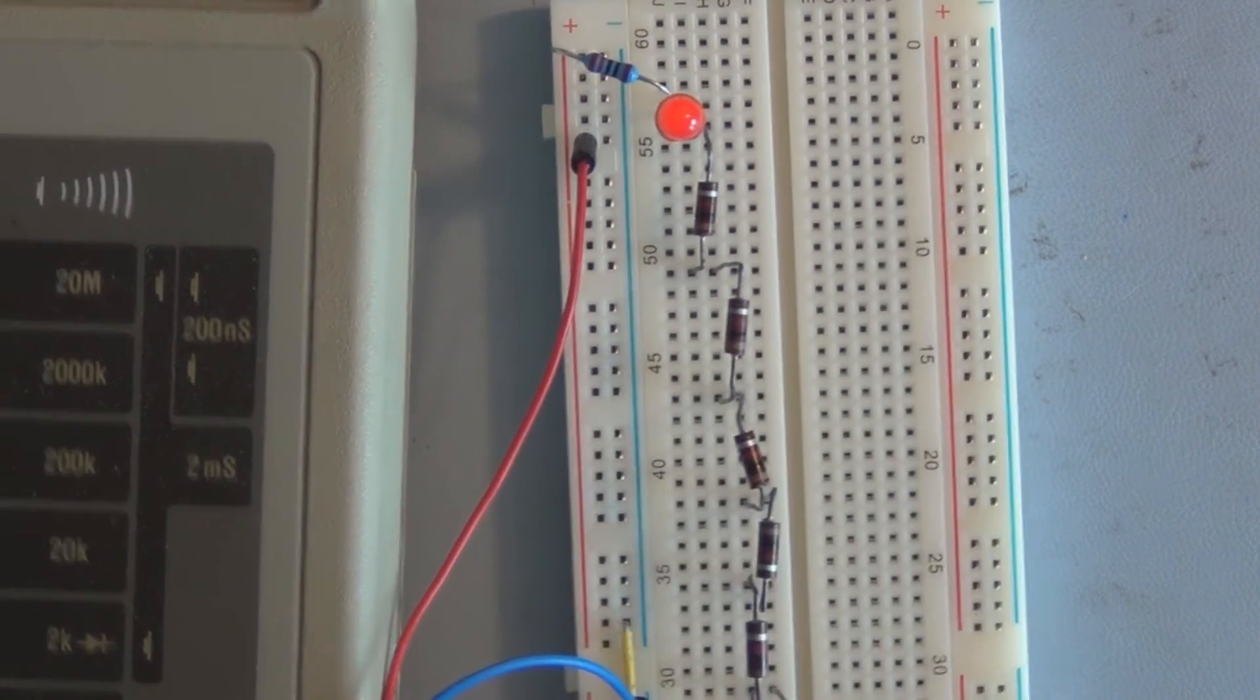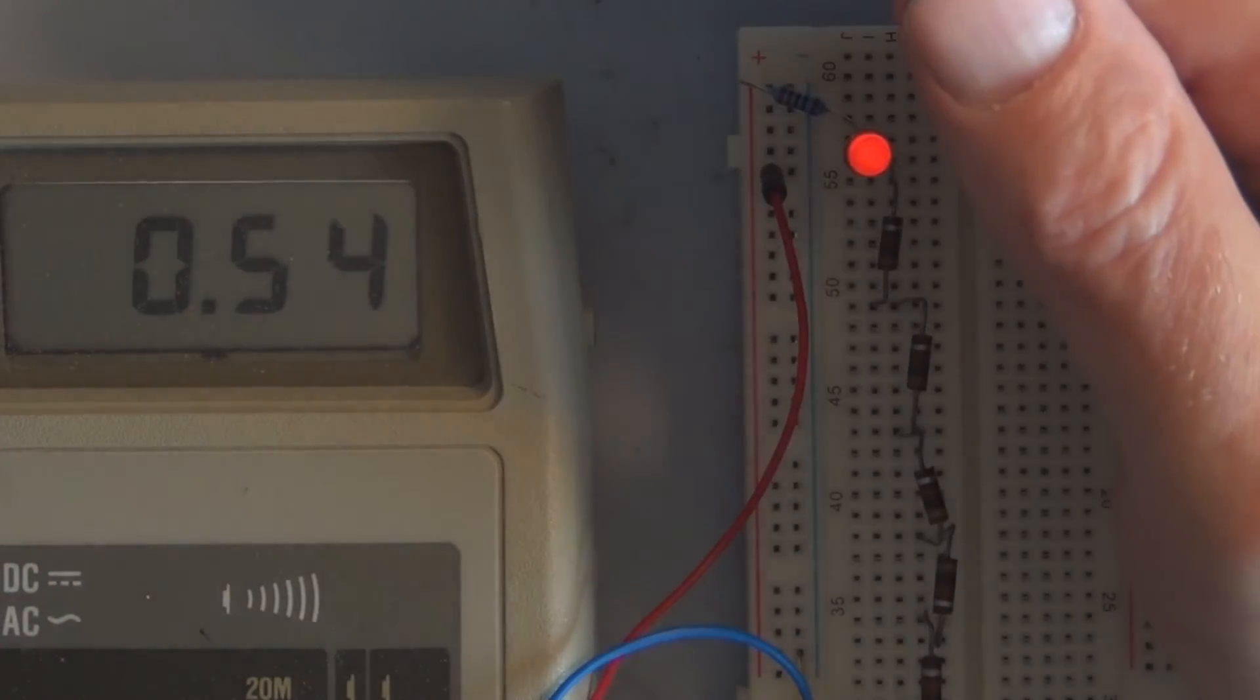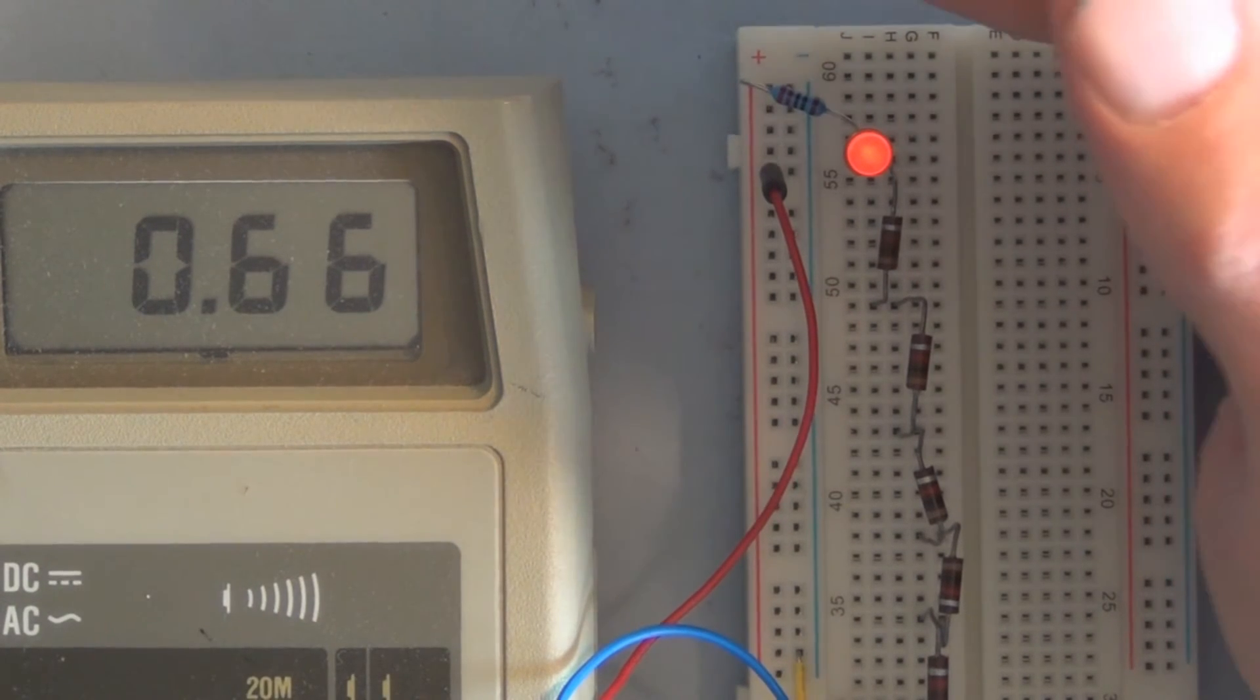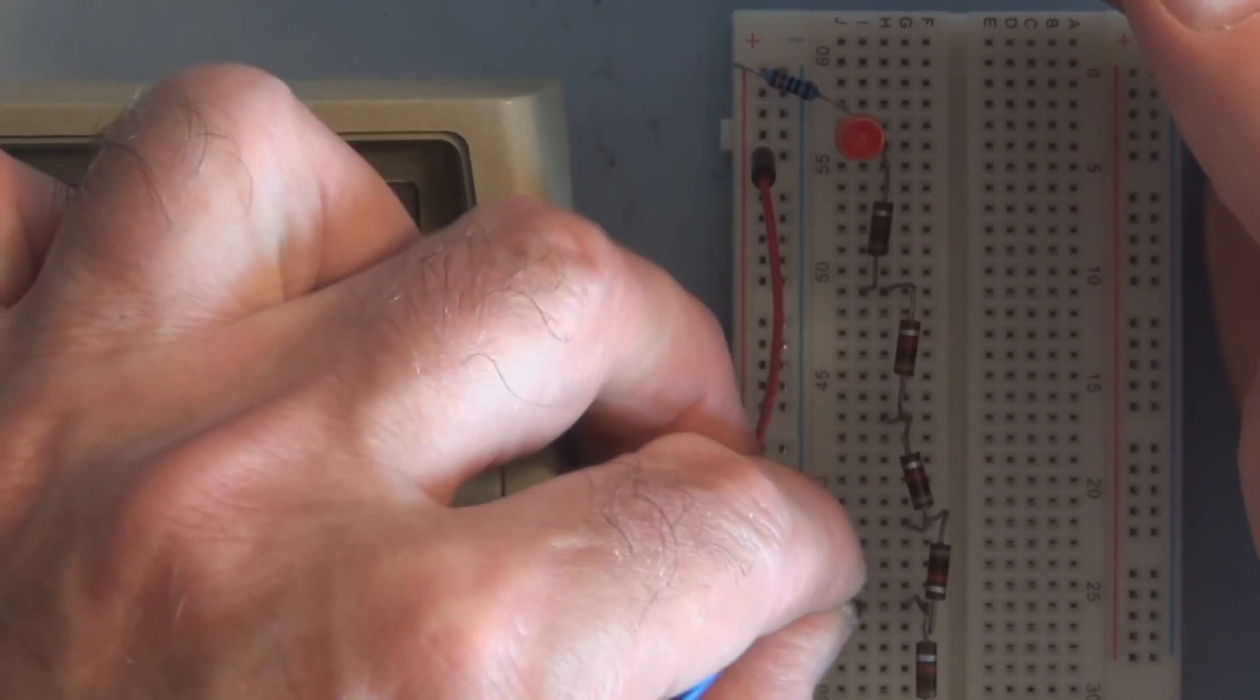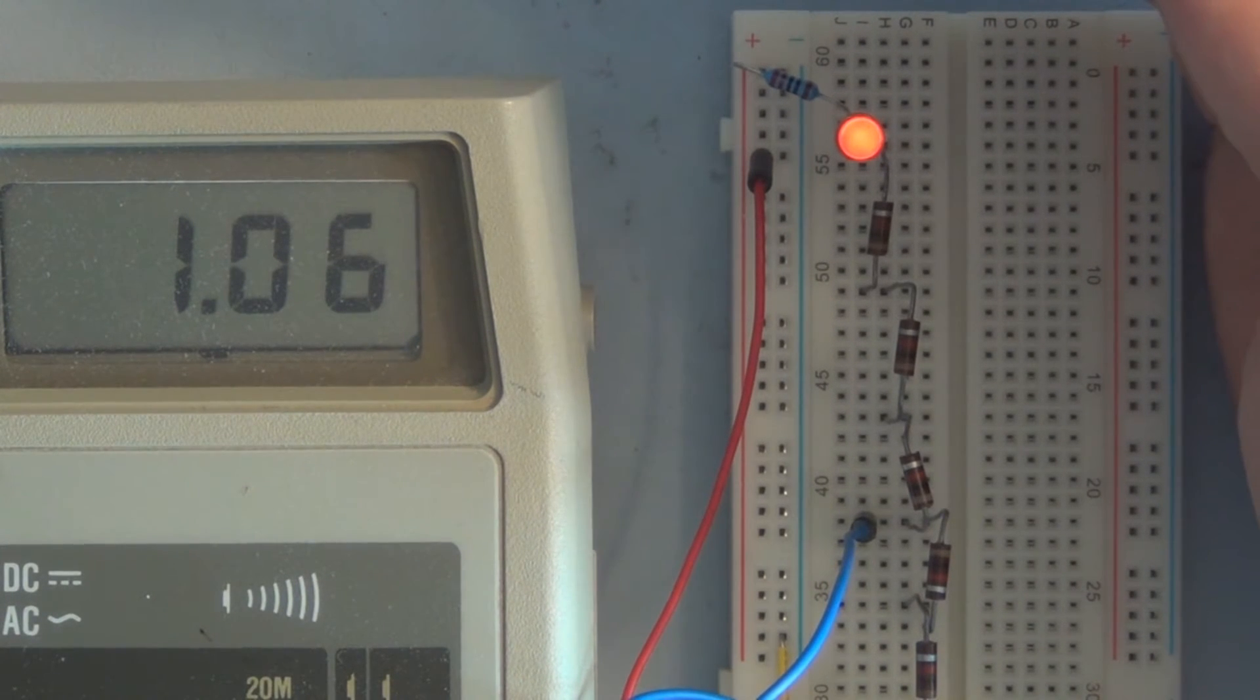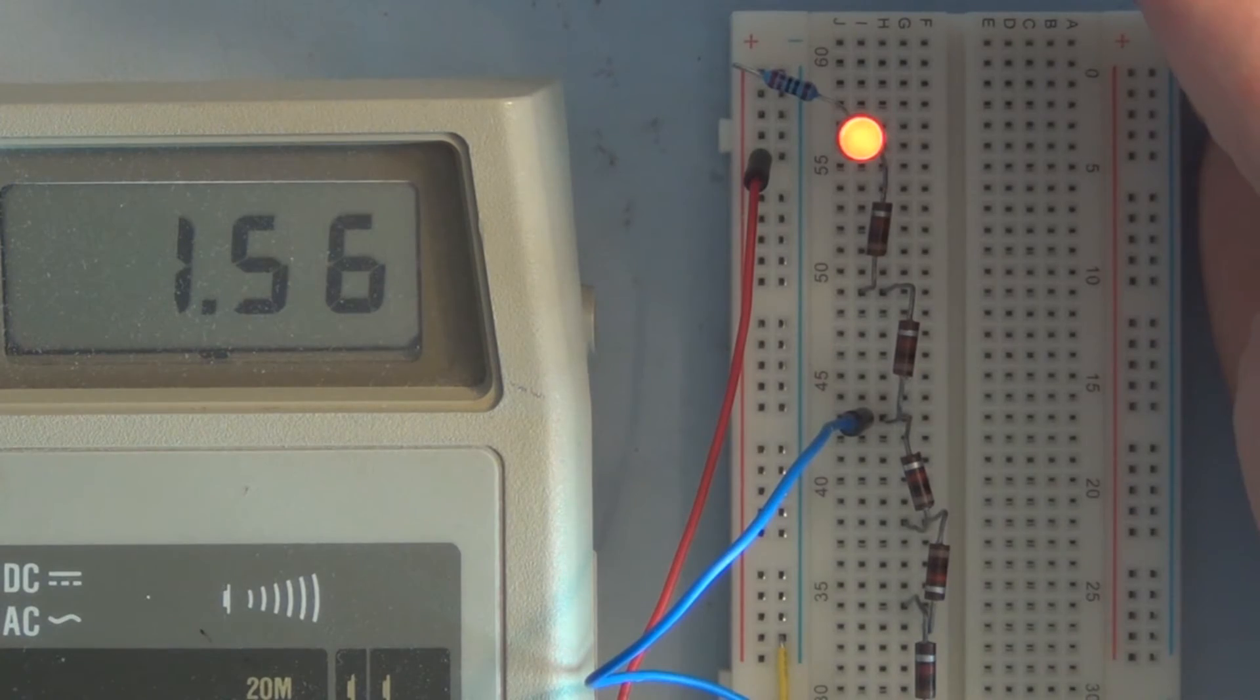This is 8k, 7k, 6k. The LED's lighting up a little bit more intense. 5k, half value total resistance. 4k, 3k, now we're up to 1 milliamp. 2k total in the circuit.